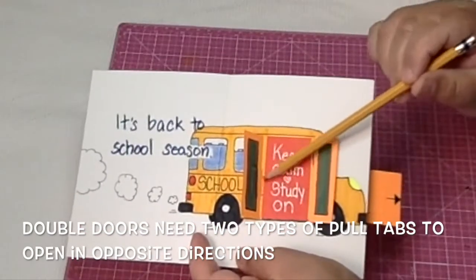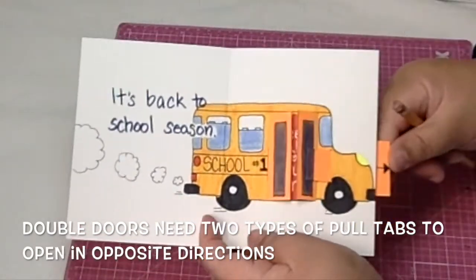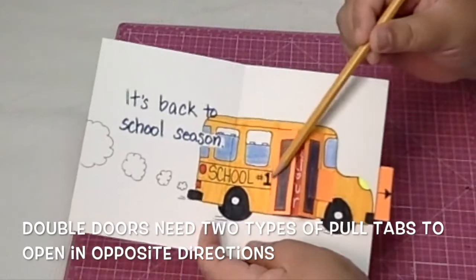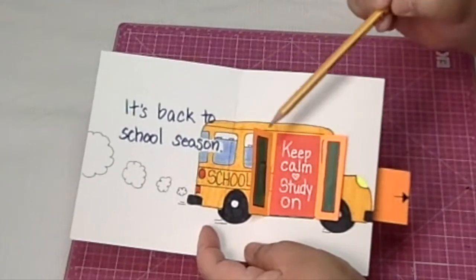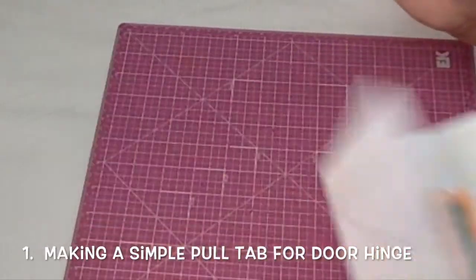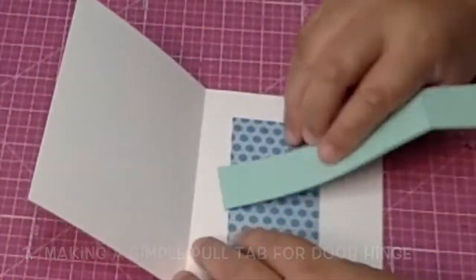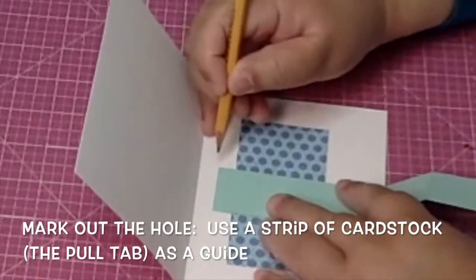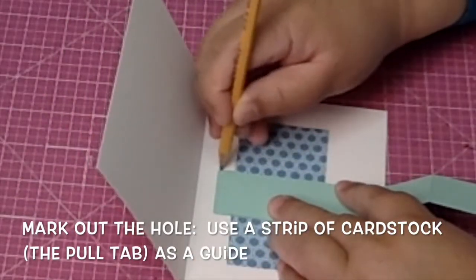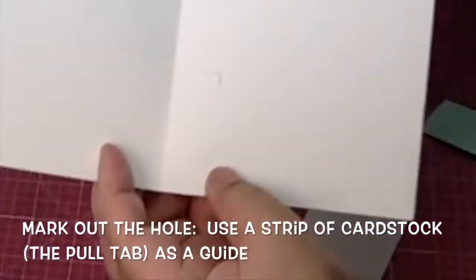Double doors need two types of pull tabs to open in opposite directions, so I'm gonna show you both of those pull tabs. I'll start with a simple one. It's just a piece of cardstock that's gonna be your pull tab, and just use that as a guide to mark out onto the card where you're gonna place it.